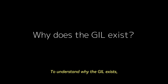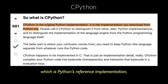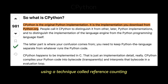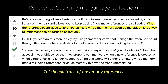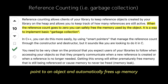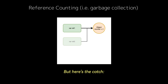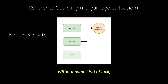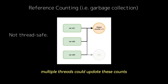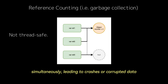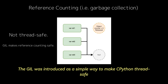To understand why the GIL exists, we need to rewind to Python's early days. CPython, which is Python's reference implementation, manages memory using a technique called reference counting. This keeps track of how many references point to an object and automatically frees up memory when the count drops to zero. But here's the catch: reference counting is not thread safe. Without some kind of lock, multiple threads could update these counts simultaneously, leading to crashes or corrupted data. The GIL was introduced as a simple way to make CPython thread safe.